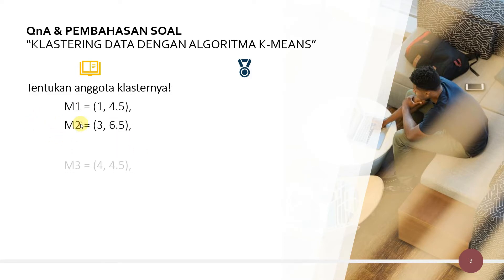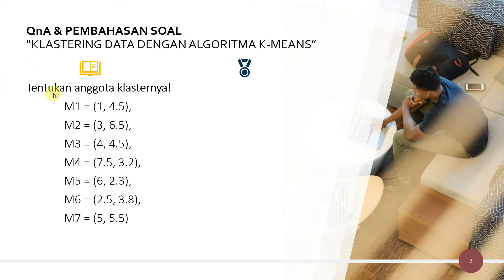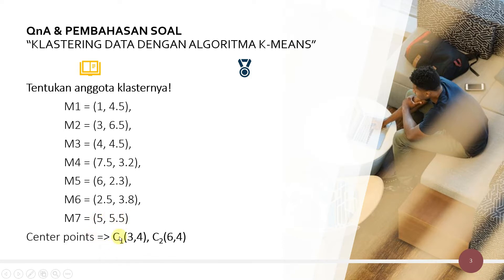Misalkan ada 7 titik: titik pertama (1, 4.5), yang kedua (3, 6.5), sampai yang ketujuh (5, 5.5). Kita sudah mendapatkan titik pusat cluster yang pertama dengan titik pusat cluster C1 yaitu (3, 4), dan yang kedua, titik pusat cluster C2 yaitu (6, 4).